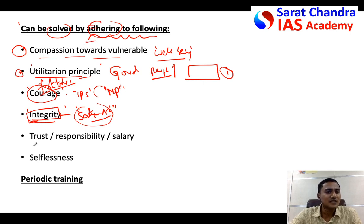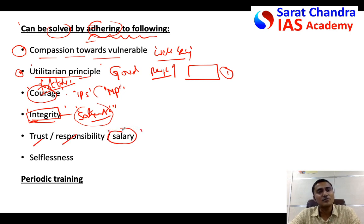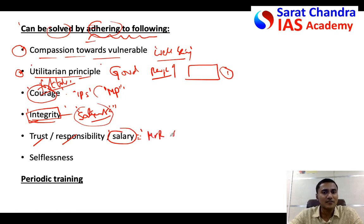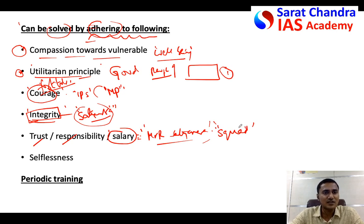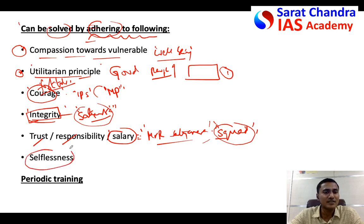Integrity helps in resolving personal cost ethical dilemmas. Another principle is the trust and responsibility the government places in you — you are paid a salary for a responsibility and trusted for a role, so you must do justice to that. A good example is MVR Satya Narayana, a school principal in Andhra Pradesh appointed as a squad member during 10th class government exams. When he found his own daughter copying, rather than acting as a father, he debarred her — because the government trusted him with that role.